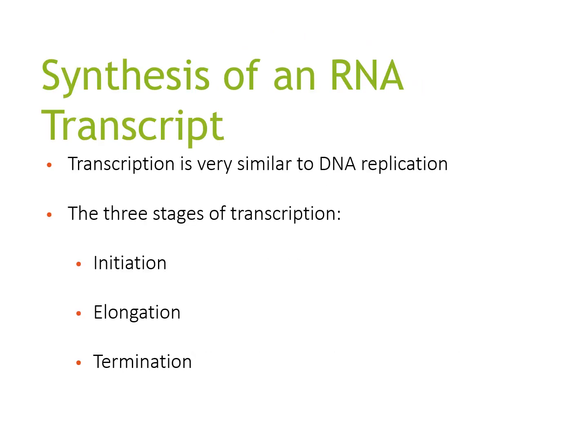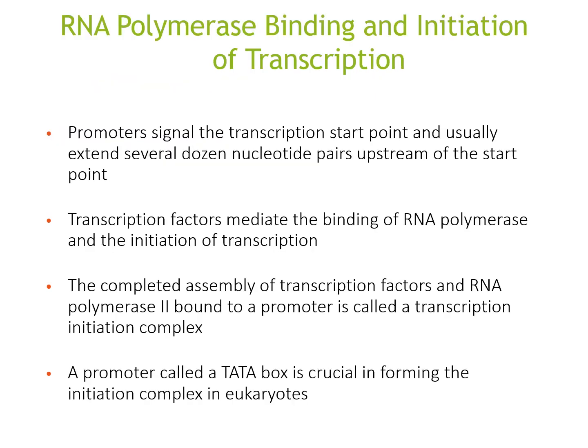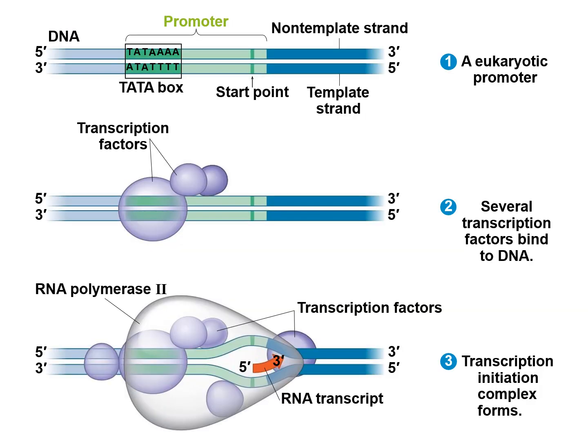Transcription is a similar process to DNA replication and also has three stages: initiation, elongation, and termination. During initiation, promoters signal the transcription start point and usually extend towards nucleotides upstream of the start point. Transcription factors mediate the binding of RNA polymerase and the initiation of transcription. The completed assembly of transcription factors and RNA polymerase II bound to a promoter is called a transcription initiation complex. A promoter called the TATA box is crucial in forming the initiation complex in eukaryotes. In the diagram you can see several transcription factors binding to the DNA to form the transcription initiation complex.